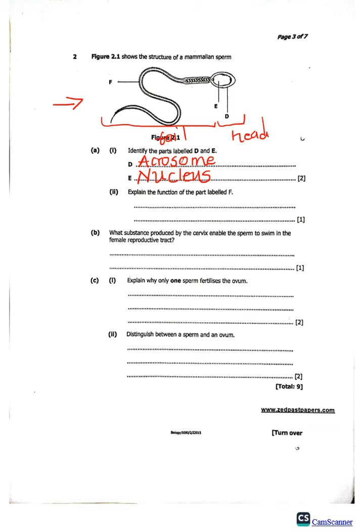Let's look at roman number two: explain the function of the part labeled F, which is the tail. The tail is used for locomotion — that is, the movement of the sperm cell from one position to another. After ejaculation, the sperm cell uses its tail to move from the point of ejaculation to the point where fertilization takes place.